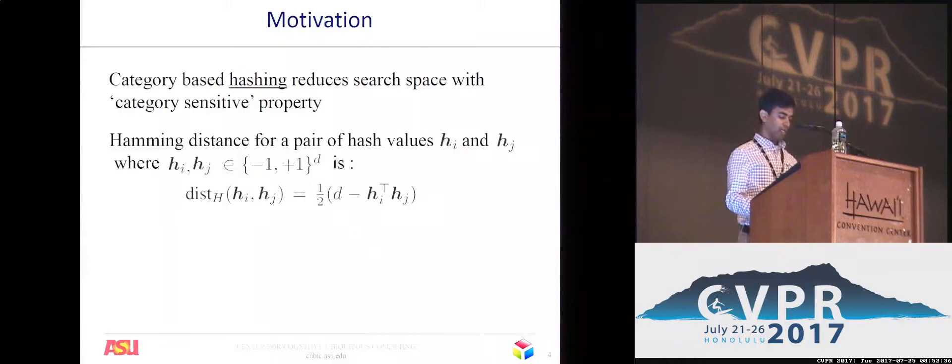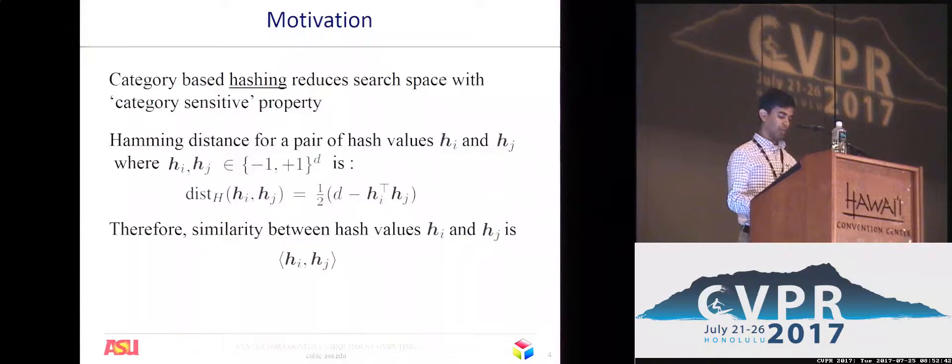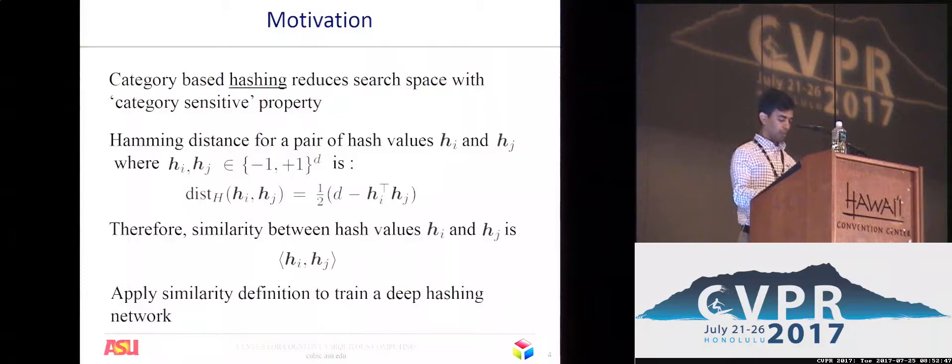The Hamming distance between a pair of hash values is related inversely to their dot product. We therefore use the dot product as a measure for hash similarity.